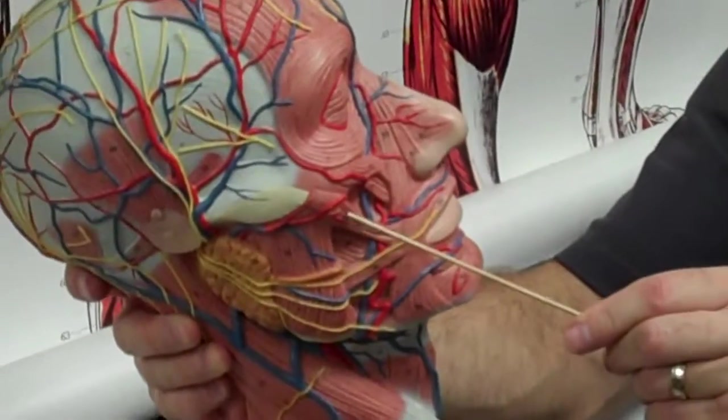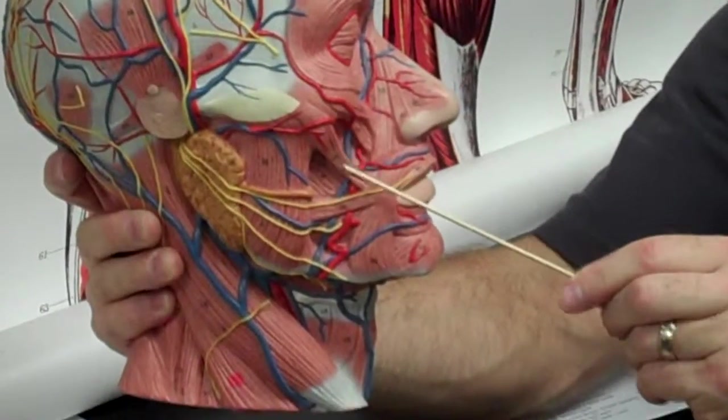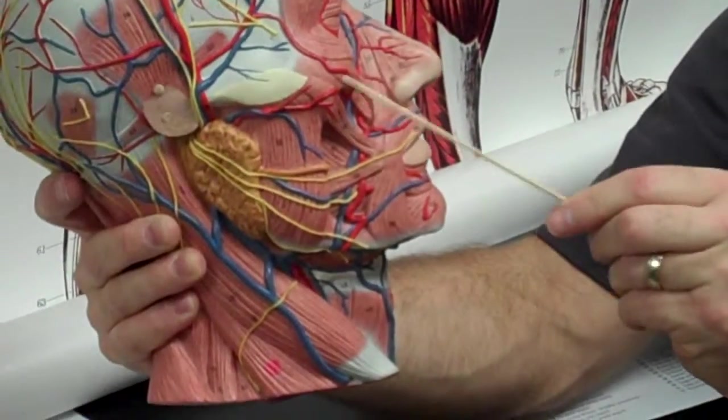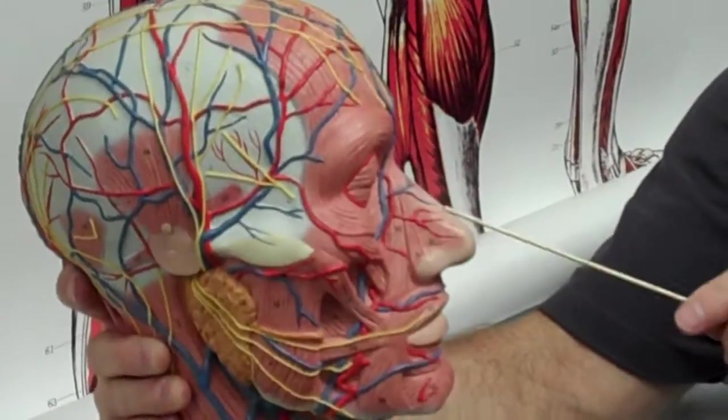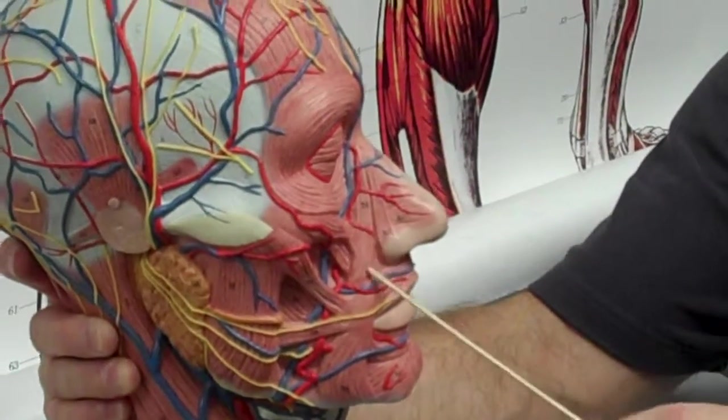Zygomatic major. Major. It's the big one that goes right to the zygomatic bone. And then this and this come together and they go to the upper lip right here.